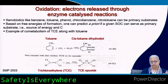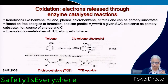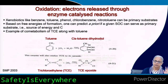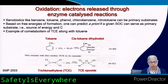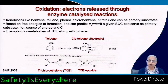If trichloroethylene (TCE) is present along with oxygen and toluene dioxygenase, it will be converted to TCE epoxide. This intermediate is easier to biodegrade compared to the original TCE, so having completed this first enzymatic step, further biodegradation becomes easier.